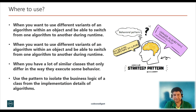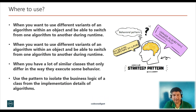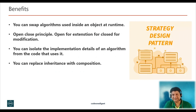So friends, when should you use the strategy design pattern? Use it when you want to use different variants of an algorithm within an object and be able to switch from one algorithm to another at runtime. Use it when you have a lot of similar classes that only differ in the way they execute. Use it to isolate the business logic of a class from the implementation details of the algorithm. Also use it when your class has a massive conditional statement that switches between different variants of the same algorithm.